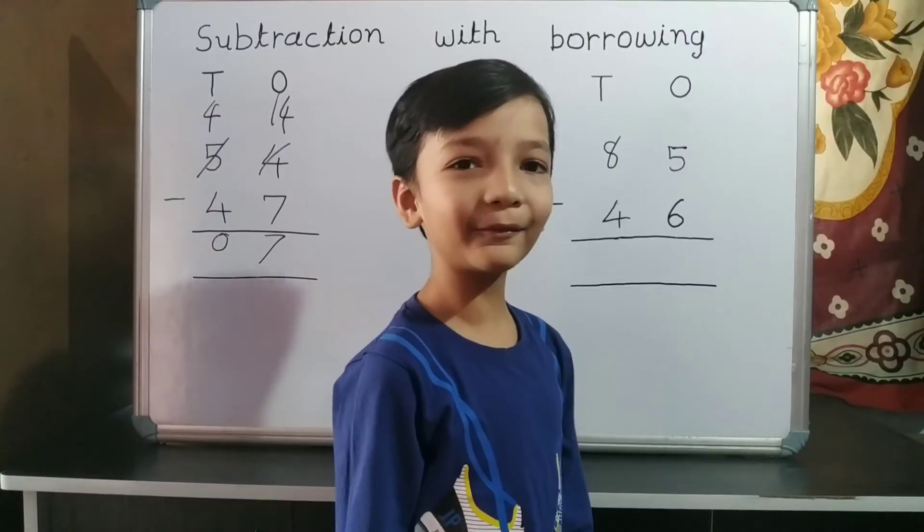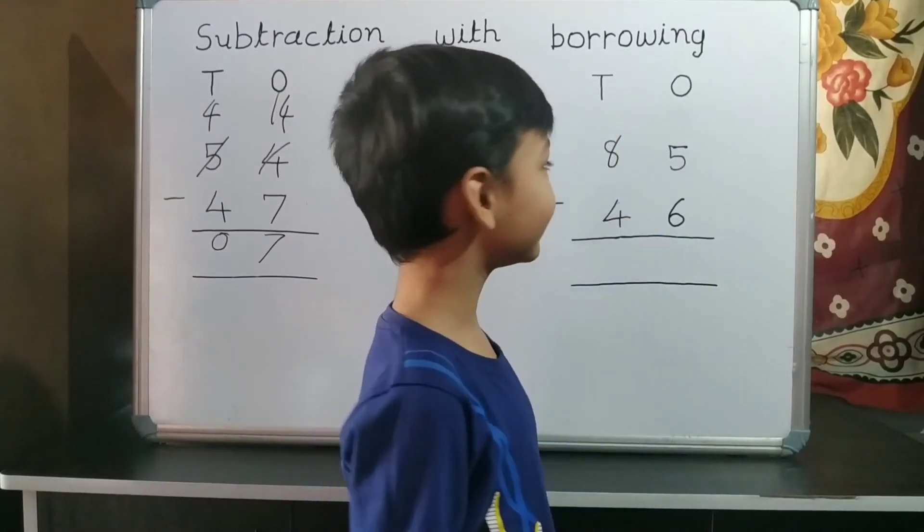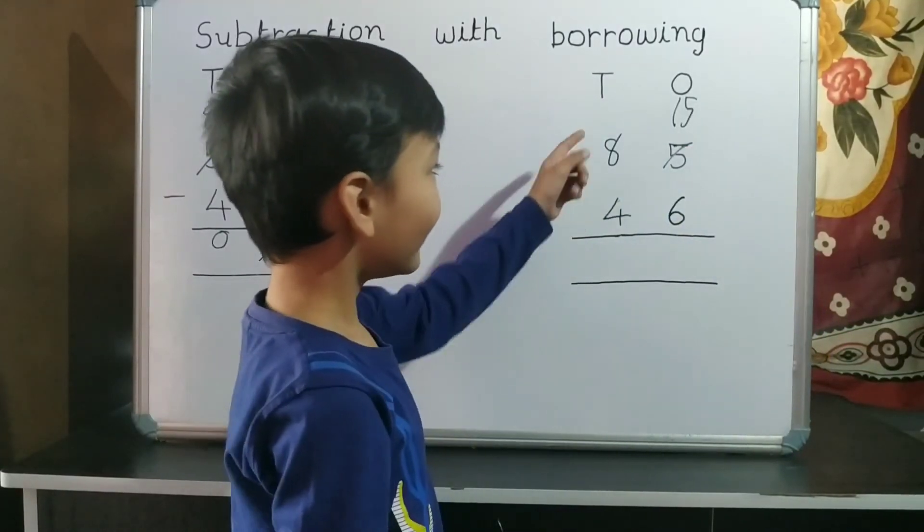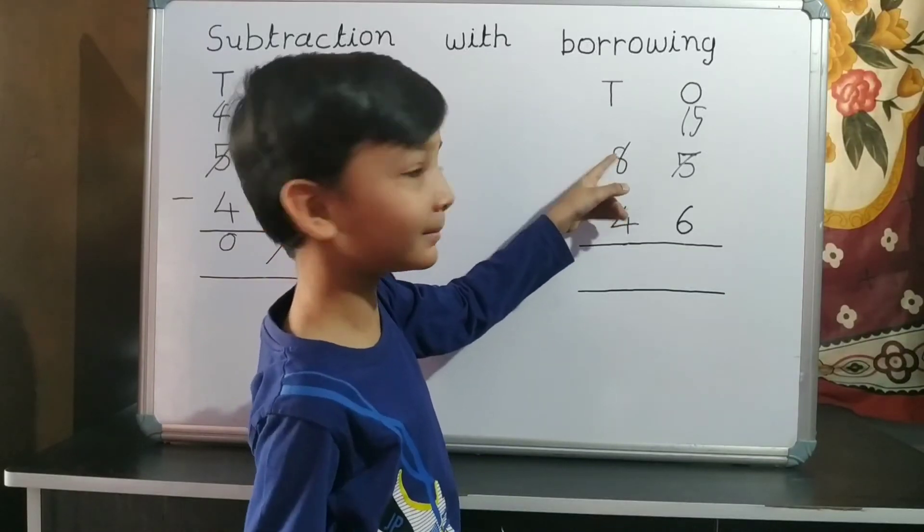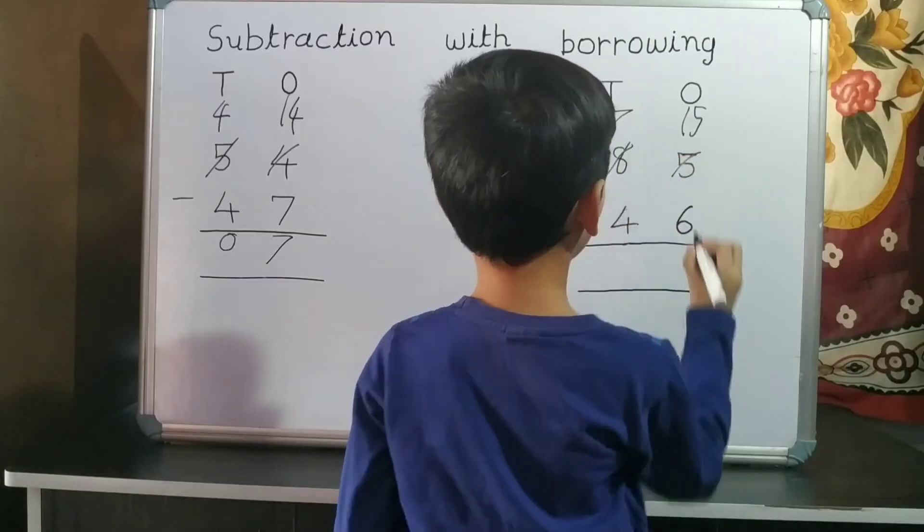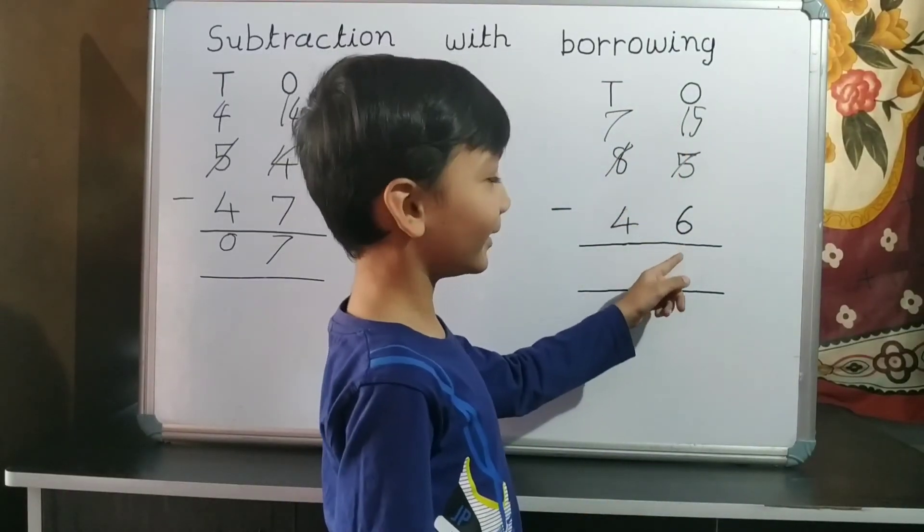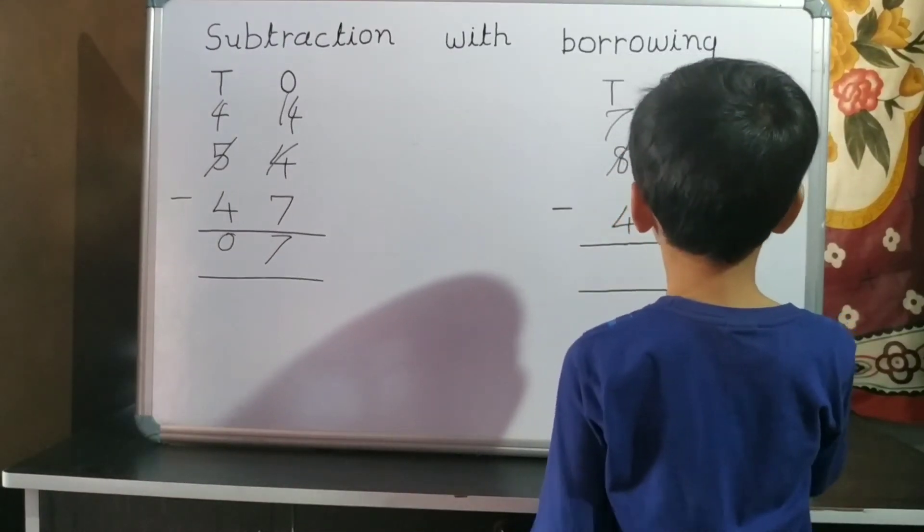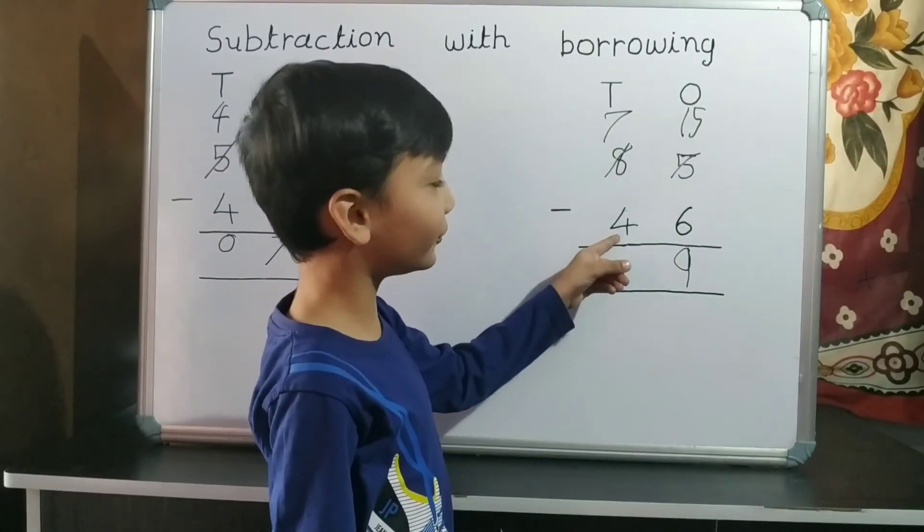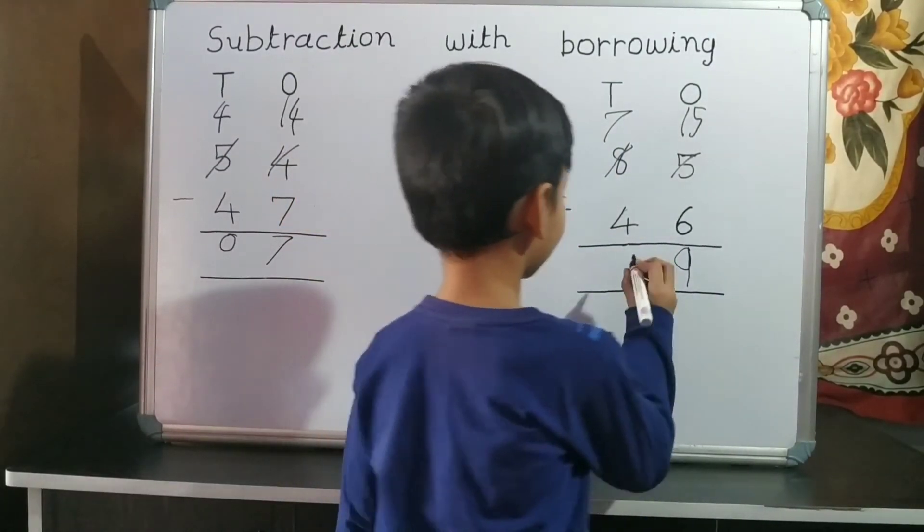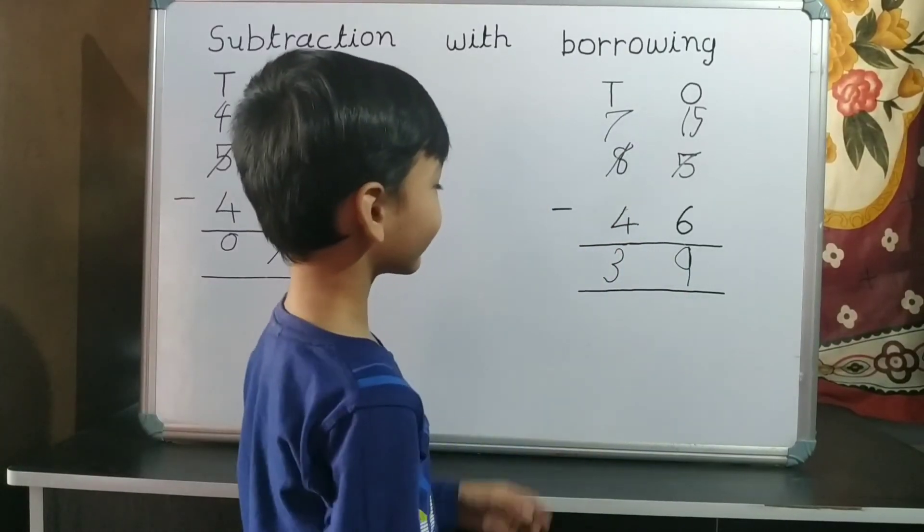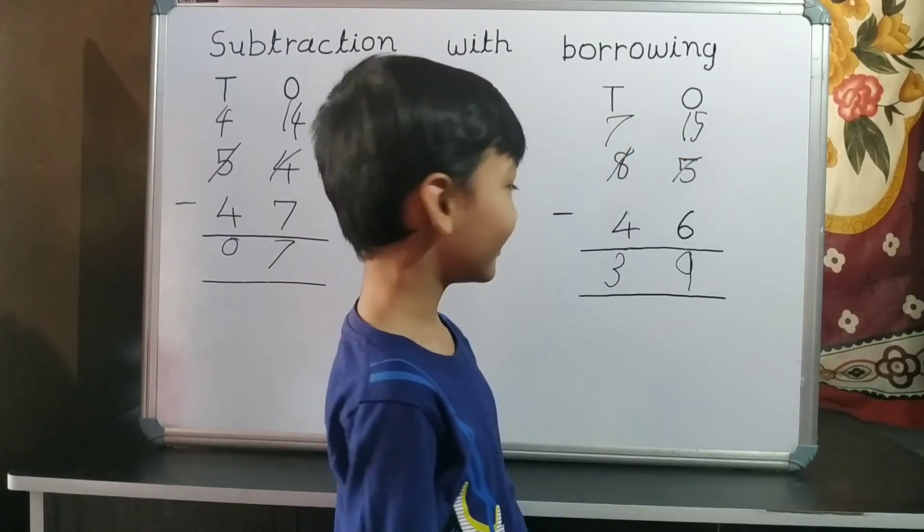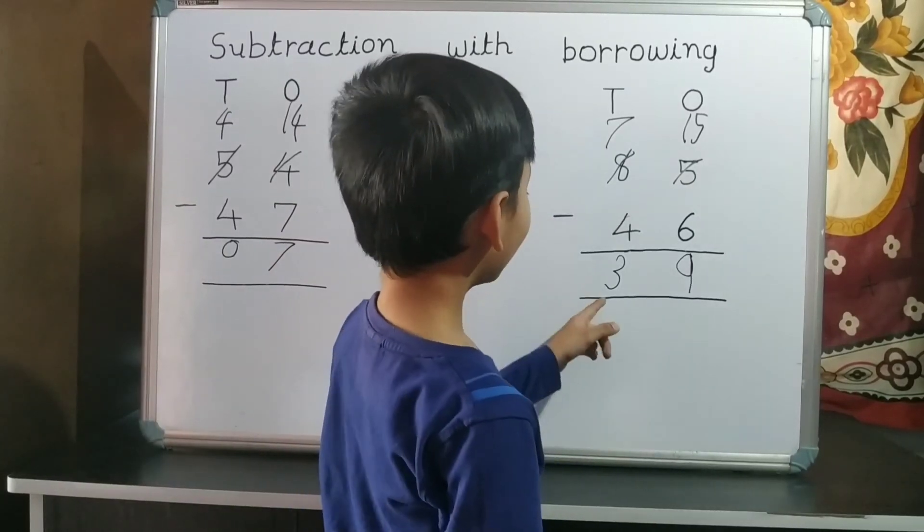So we borrow 10 from 10's place. Now 8 becomes 7. 15 minus 6 equals 9. 7 minus 4 equals 3. 3 is on 10's place and 9 is on 1's place, so our answer is 39.